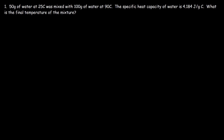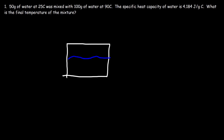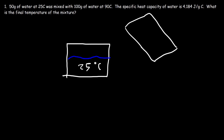Consider this problem. If we mix two samples of water at different temperatures, what's going to be the final temperature of the mixture? So let's say if we have 50 grams of water at 25 degrees Celsius, and then we're going to pour some hot water to it. Let's say the hot water is at 90 degrees Celsius. When these two are mixed, what's going to be the final temperature?